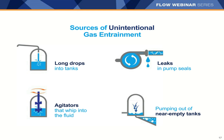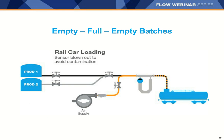Empty-full-empty batching is another source of intentional air introduction. For example, in rail car loading, two products are metered through one sensor and the sensor is blown dry between batches to avoid cross-contamination. This means the meter goes from empty to full to empty again, creating different variations of entrained gas and bubble flow through the meter. Types include slug flow (periodic coalesced bubbles in oil wells or tank farms), bubble flow (continuously distributed bubbles), and empty-full batching (precise liquid-gas interface for truck loading and multi-product lines).